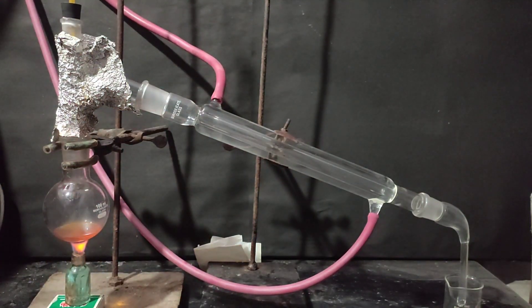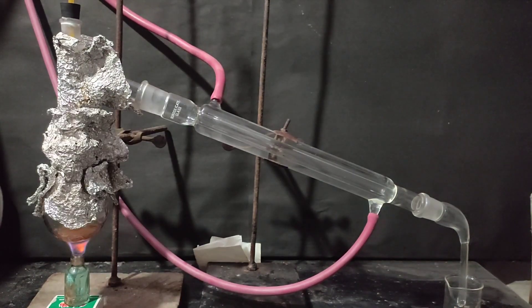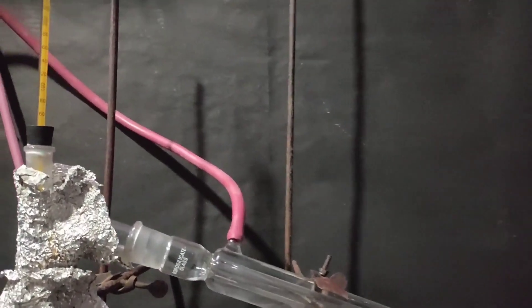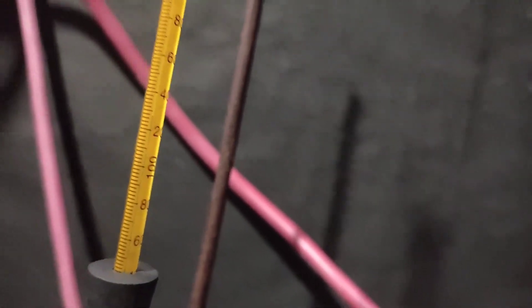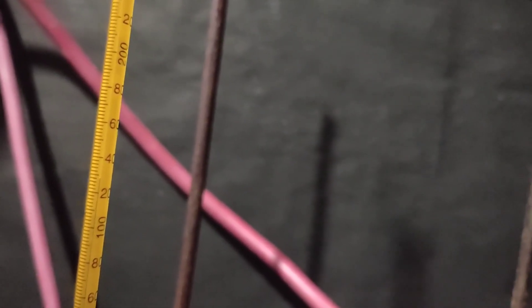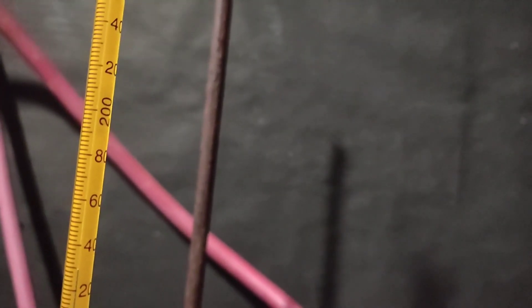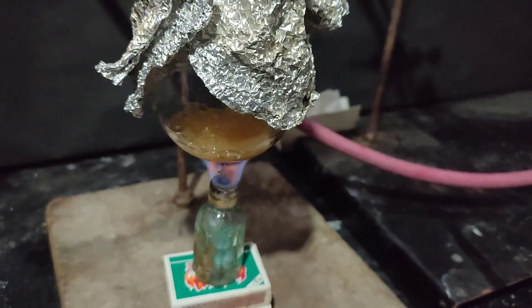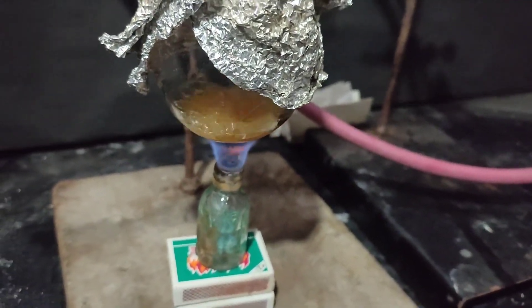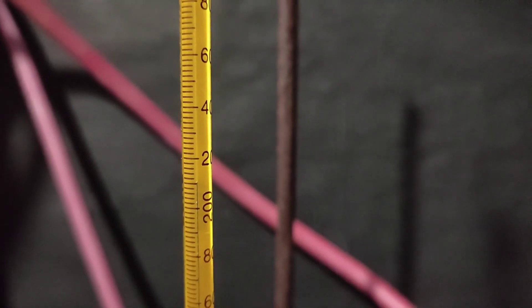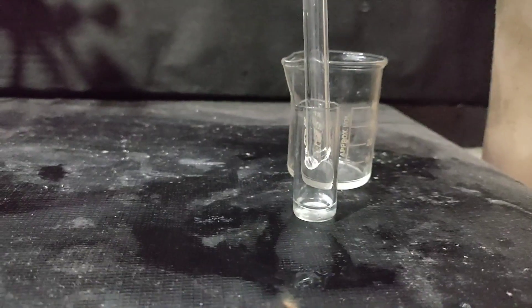The still head was insulated with aluminum foil. The receiver was changed and the flask was heated with spirit lamp. The flask was also wrapped up with aluminum foil. Benzyl alcohol boils at 205 degrees Celsius. So initially some distillate that came around 100 degrees C was discarded as it may be some water that would have remained. The distillate that came between 200 to 210 degrees Celsius was collected.